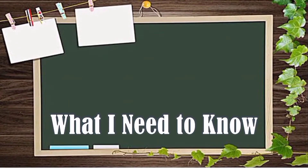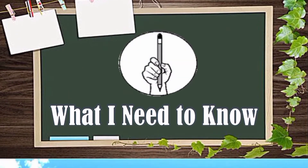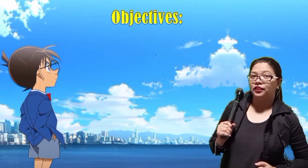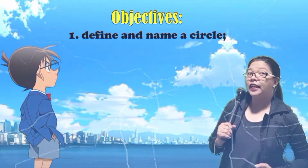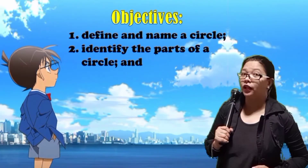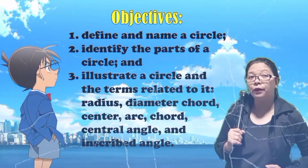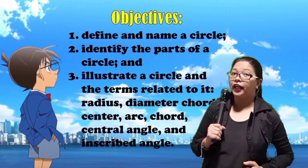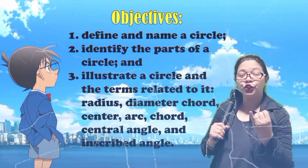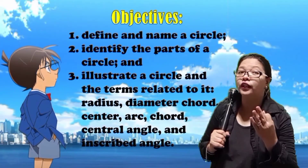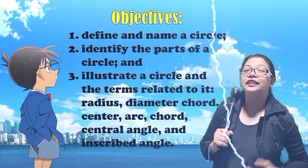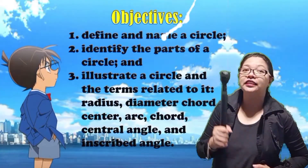What I Need to Know. Here are our objectives. Number 1: Define and name a circle. Number 2: Identify the parts of a circle. And number 3: Illustrate a circle and the terms related to it — Radius, Diameter, Chord, Center, Arc, Central Angle, and Inscribed Angle.